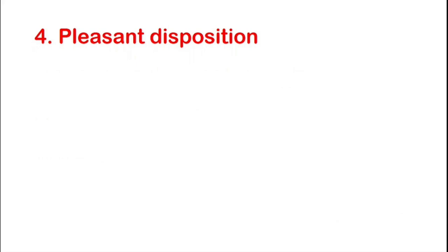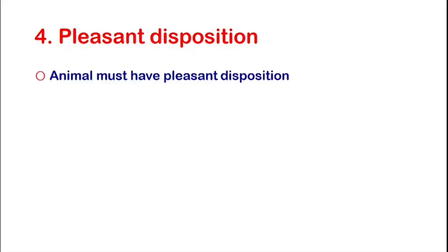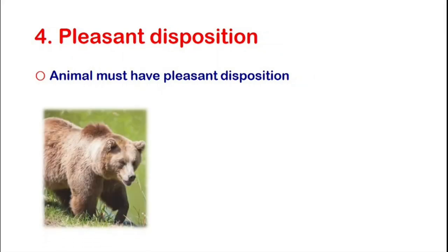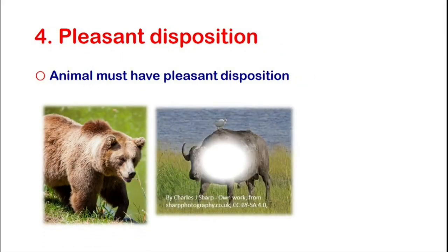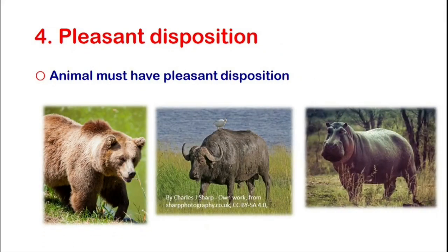Pleasant Disposition. An animal must have a pleasant disposition. Animals like grizzly bears, African buffalo, and hippopotamus are too dangerous to keep around humans. Similarly, zebras were also proved very difficult to domesticate, as they have a tendency to bite humans.